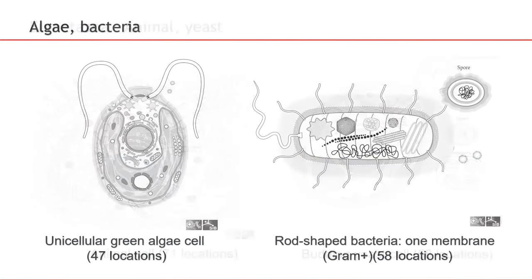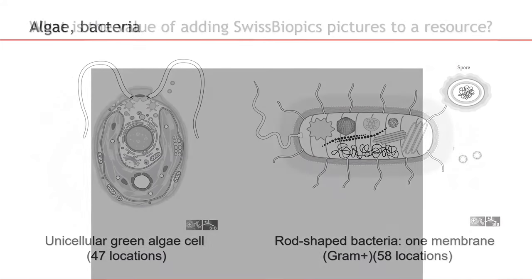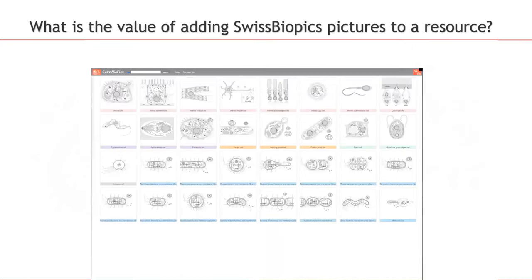The budding yeast cell is quite different. There is also a unicellular green alga with 47 locations, and a rod-shaped bacteria. These are examples of the different cells available in SwissBioPix.